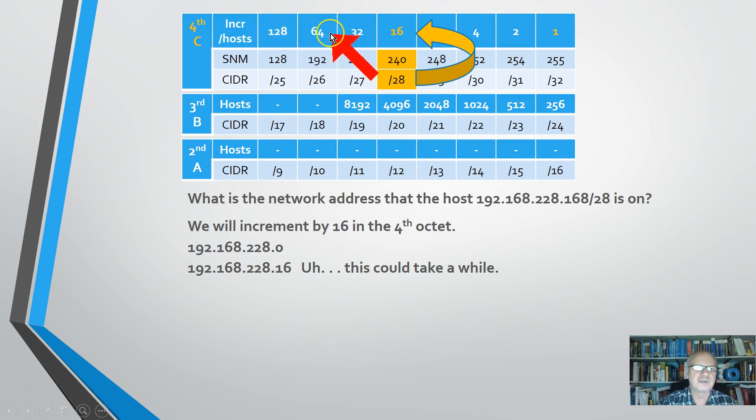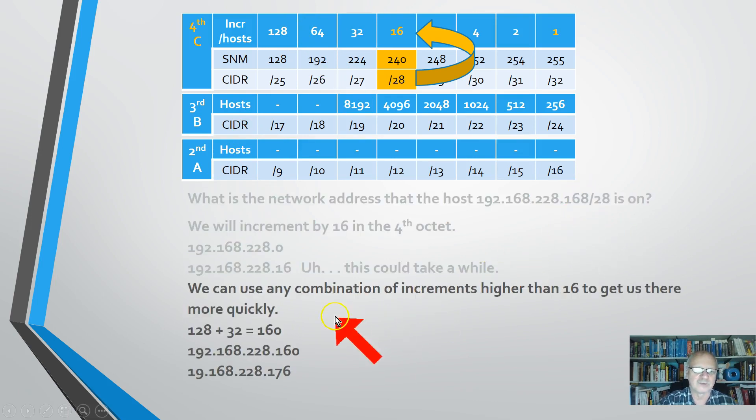Because it's a factor of these increments, I can jump up to any one of these. I can immediately go to 192.168.228.128 and I'd be a long ways there. Well, let's do this. I'm going to add 128 to get up to 128.